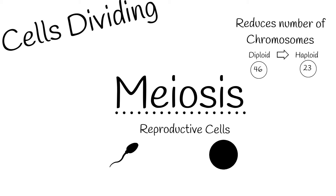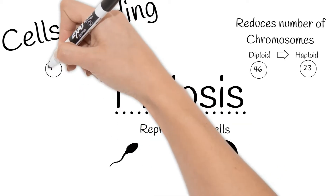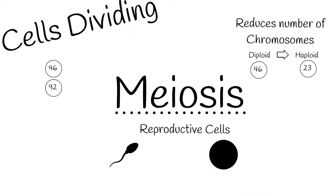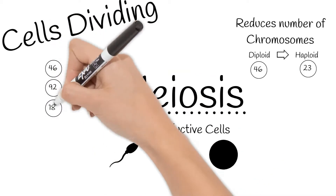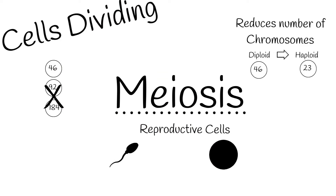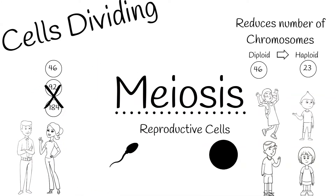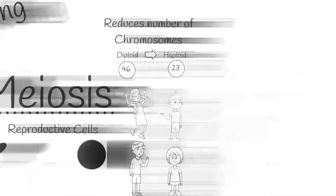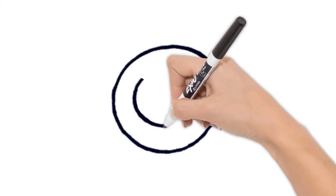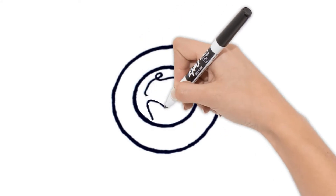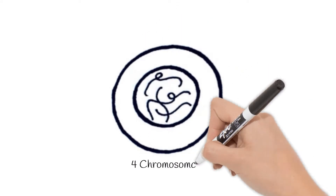This is important so chromosome number doesn't double every generation, as well as allows for genetic variation and equal chromosomes being passed on from each parent. While we have 46 chromosomes, our cell here is going to have 4, so it is easier to see.